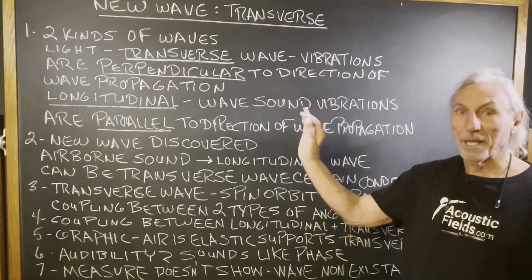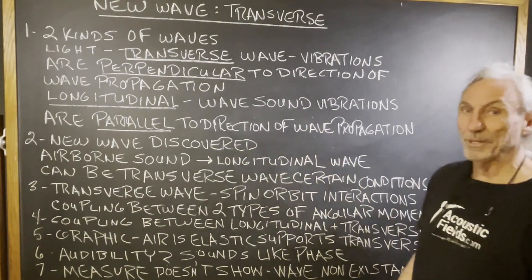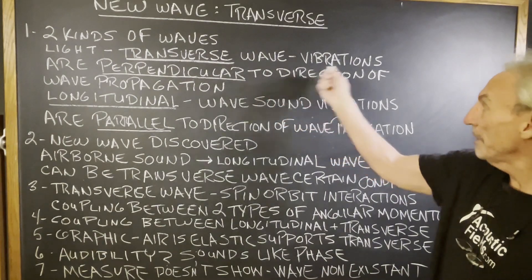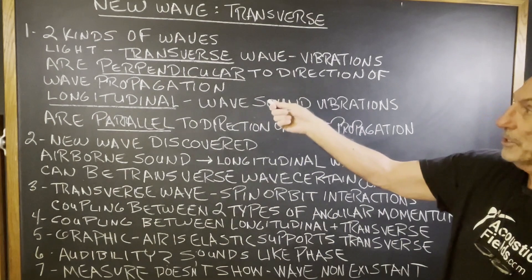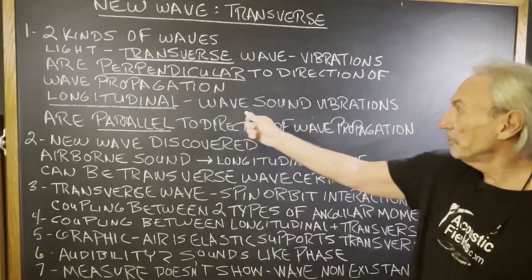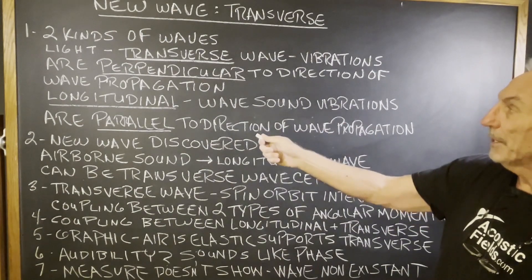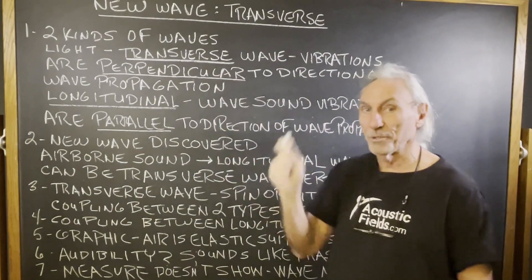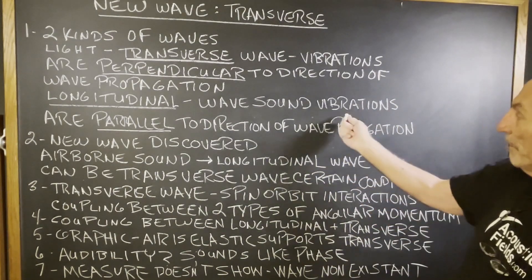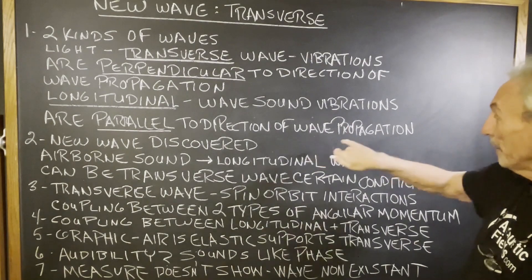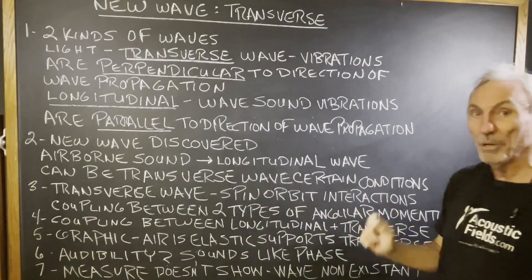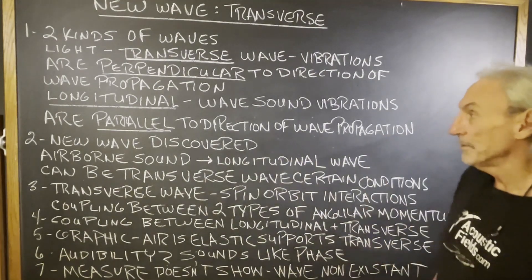A little background — two kinds of waves. Light is a transverse wave, where vibrations are perpendicular to the direction of wave propagation. A longitudinal wave — sound — has vibrations parallel to the direction of wave propagation. So one is perpendicular, one is parallel. That's all we need to keep in mind right now.